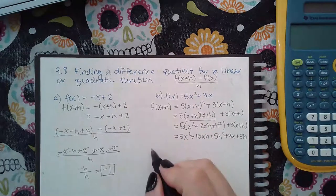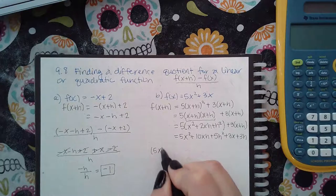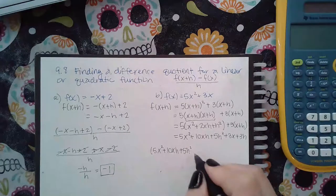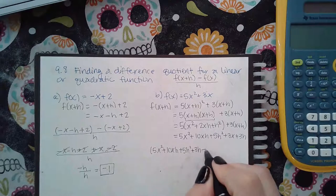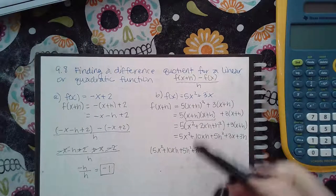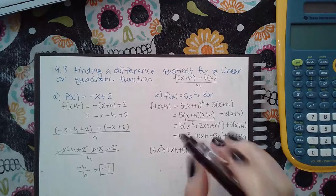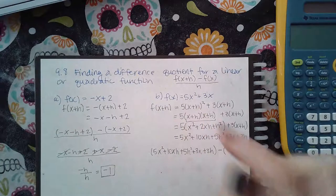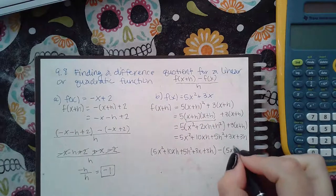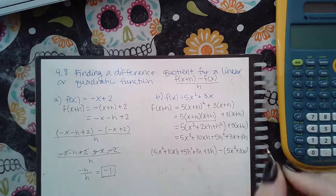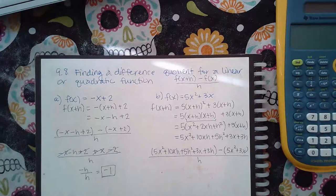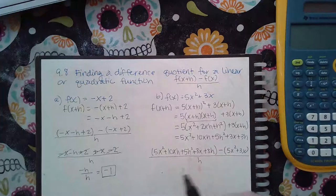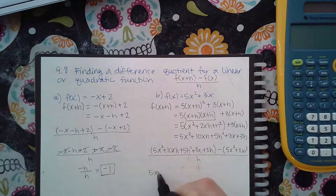So the first thing is to put that expression in front. And then subtract the original function all over h. And again, same as before, there's nothing in the front, no exponent to apply. So I don't really need that first set of parentheses.